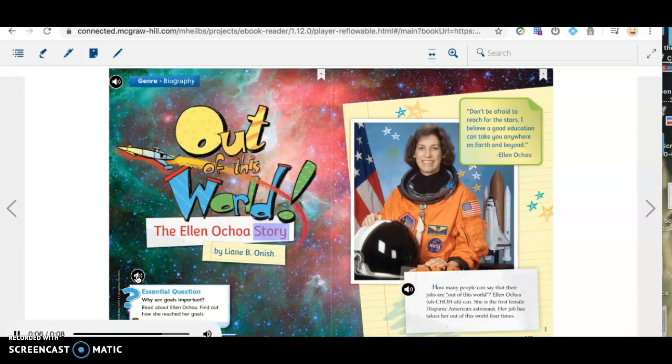All right. So do you see any text features that make this a biography so far? Yes, I see a photograph. This photograph is a key feature for it being nonfiction and a biography. Now let's listen. How many people can say that their jobs are out of this world? Ellen Ochoa can. She is the first female Hispanic American astronaut. Her job has taken her out of this world four times. Don't be afraid to reach for the stars. I believe a good education can take you anywhere on Earth and beyond. Ellen Ochoa. Okay. So these words are directly from Ellen Ochoa.